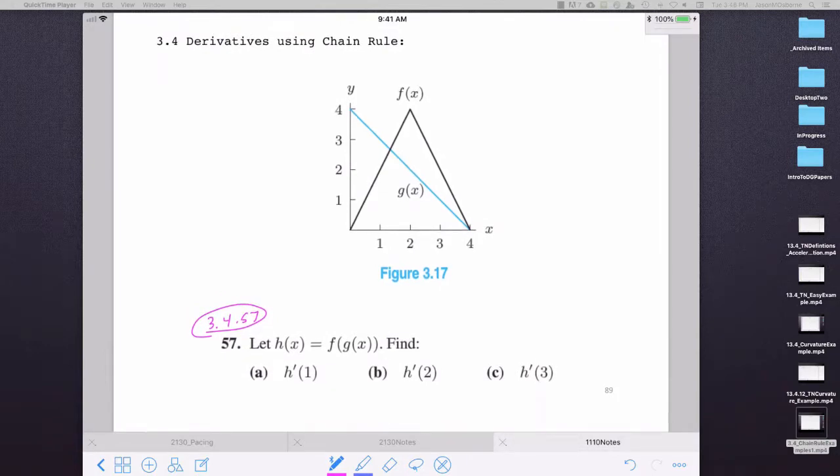Let's do problem, let's do part A of this problem. This is section 3.4, problem number 57. Three parts to it. The question is asking you, that you're given some function h of x.